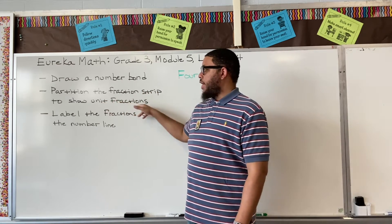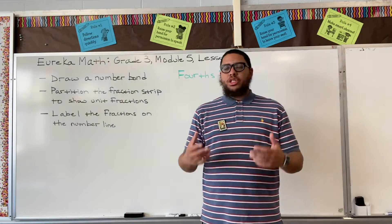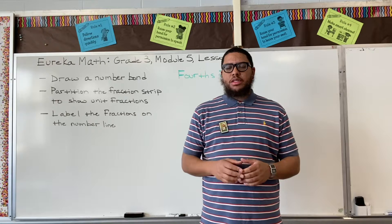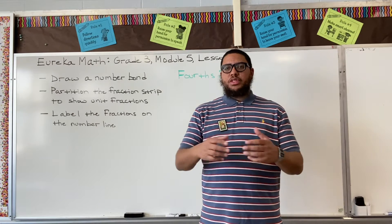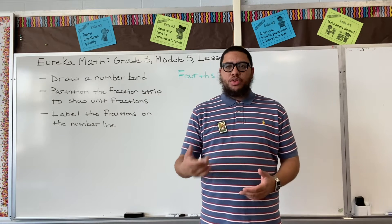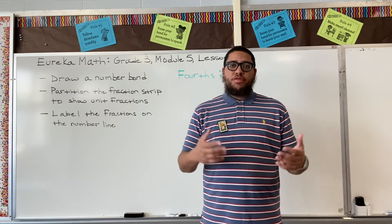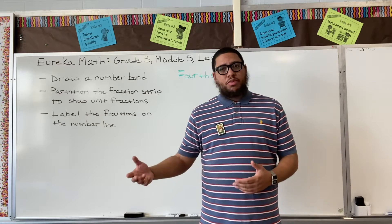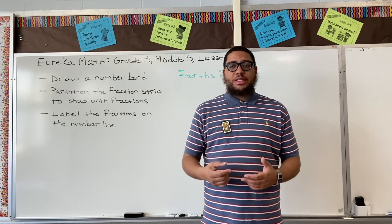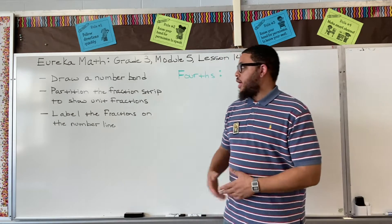We're going to partition the fraction strip — a fraction strip is just basically a picture of a rectangle — and cut it into smaller fractional pieces. We're going to partition the fraction strip to show unit fractions. A unit fraction is basically just an equal part of an object. If you take a hoagie and cut it into halves, the unit fraction is one-half. If you cut it into three pieces to share with two other people, the unit fraction would be one-third.